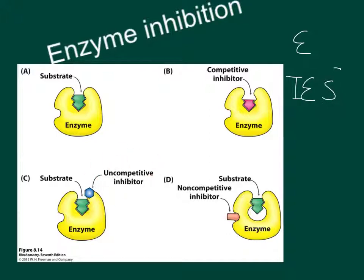Finally, with the uncompetitive inhibitor, it can only bind to the enzyme-substrate complex — it cannot bind to the enzyme by itself, so it has no affinity for the free enzyme. This example shows that when the enzyme is bound to the substrate, a little notch forms where the uncompetitive inhibitor is then able to bind. You'll notice that with both a pure non-competitive inhibitor and an uncompetitive inhibitor, the ability of the substrate to bind to the enzyme is not changed. That's important for understanding how KM and Vmax are affected.